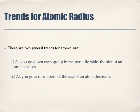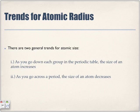There are two general trends for atomic size. As you go down each group in the periodic table, the size of an atom increases. Why? Because we are adding an additional energy level to the outer part of the atom.